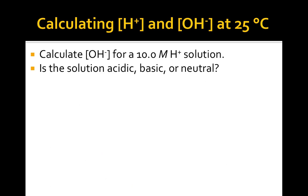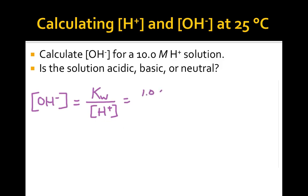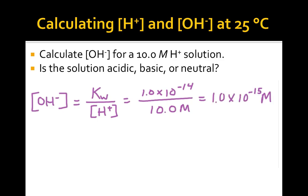For the third example, we solve the ion product constant expression for the hydroxide ion concentration. Once we substitute the value for Kw and the H-plus concentration, we see that this solution has a much, much smaller concentration of hydroxide than hydrogen ion. Since the hydroxide ion concentration is less than the hydrogen ion concentration, it's an acidic solution.